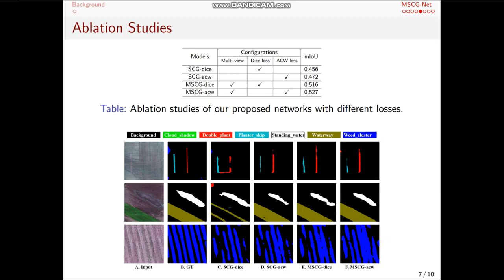We also conducted ablation studies to demonstrate that our proposed multi-view strategies and the adaptive class weighting loss function can progressively improve the model's performance. The figures and tables show our model, for example, the MSCG-ACW model, which obtained over 7% higher accuracy than the vanilla SCG with the dice-loss model.